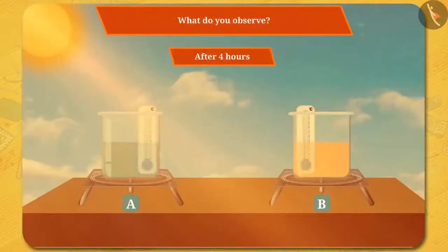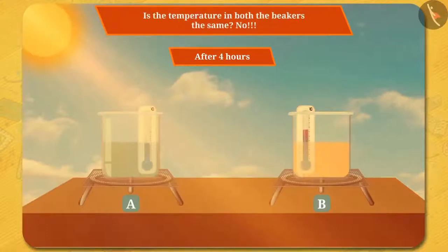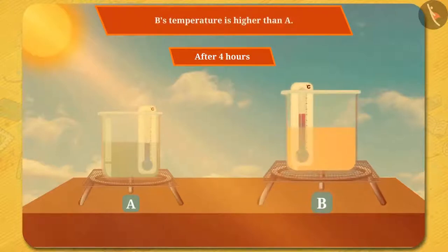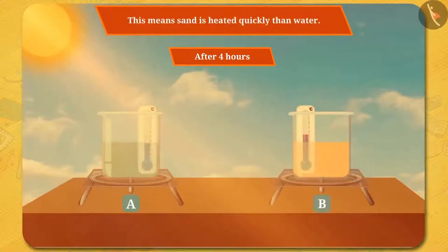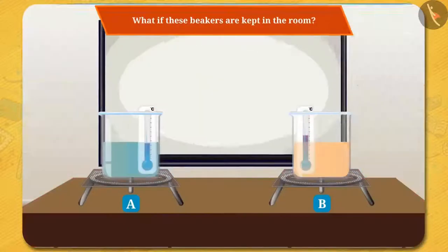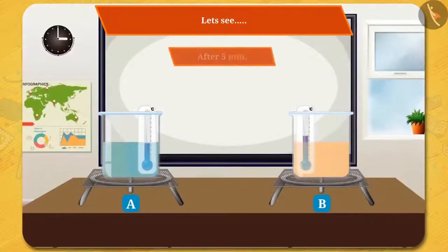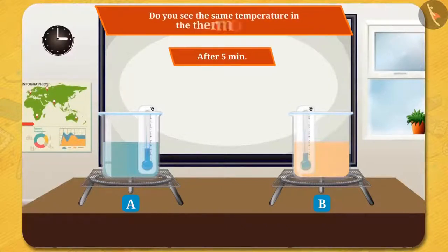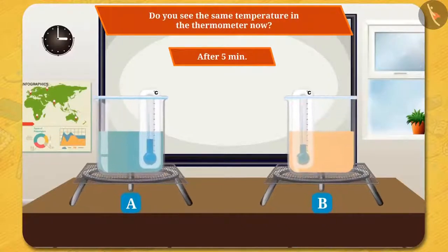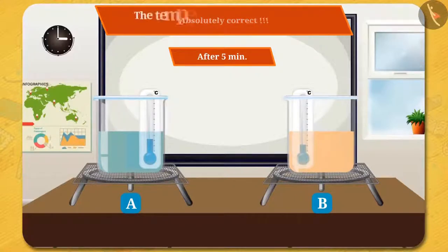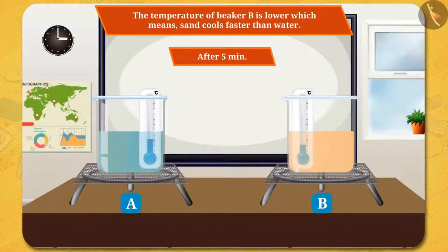What do you observe? The temperature in both of the beakers starts rising. Is the temperature in both beakers the same? No. Beaker B's temperature is higher than A. This means sand is heated more quickly than water. But what if these beakers are kept in the room? The temperature of beaker B is lower, which means sand cools faster than water.